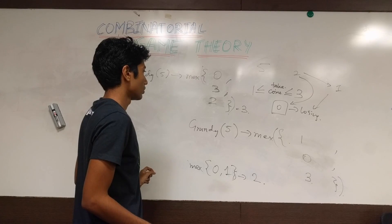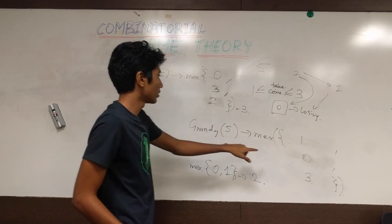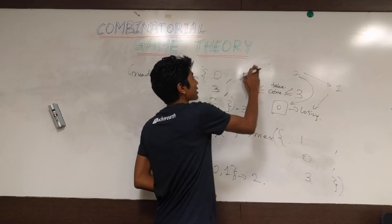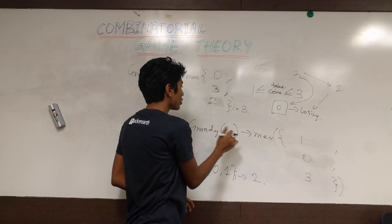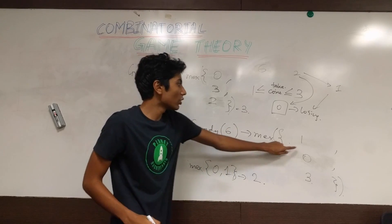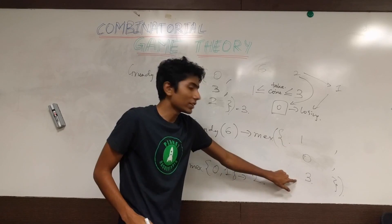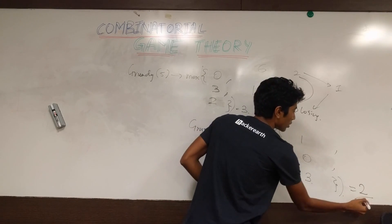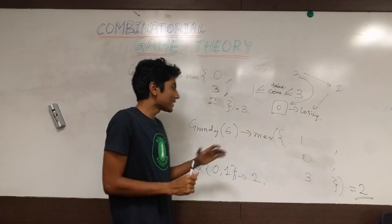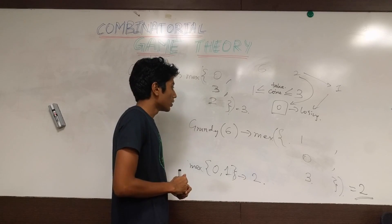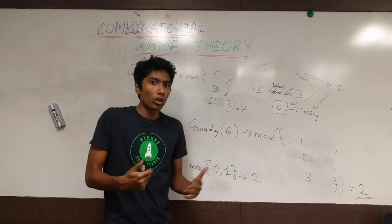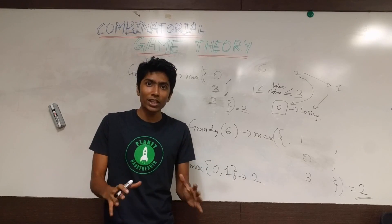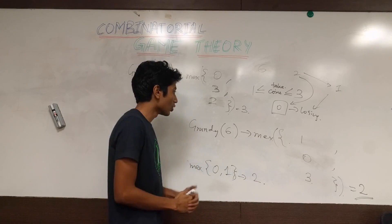Grundy of 6 is MEX of {Grundy(5), Grundy(4), Grundy(3)} = MEX of {1, 0, 3} = 2. So Grundy of 6 equals 2. This is just the basic theory of impartial games. Using this, we are going to be solving NIM games. There is no practical implementation yet, but that will be in the very next video.